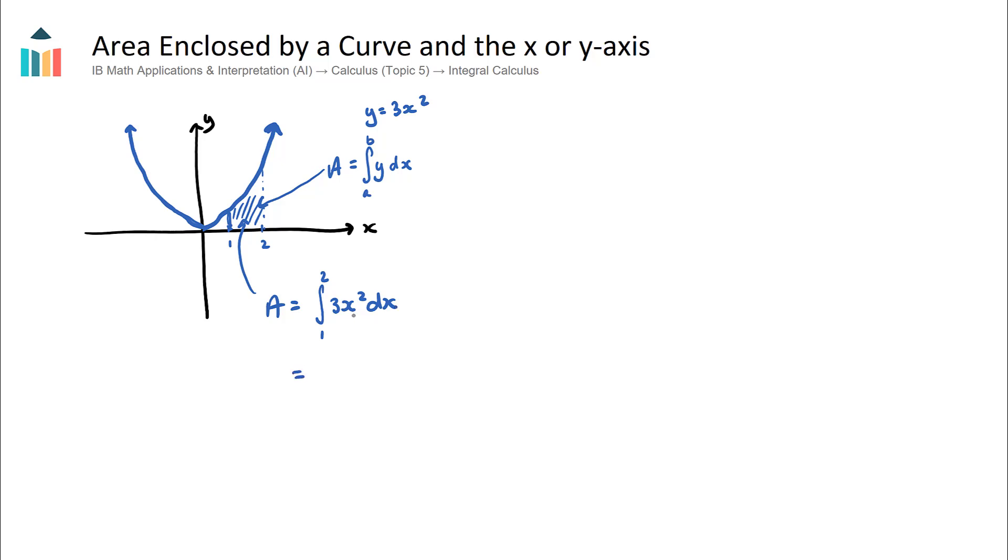What we can do is we can integrate 3x squared, this will become 3x to the power of 3 over 3, which is just going to be x cubed. Once we cancel out the threes, we will get x cubed, we have an upper bound of 2 and a lower bound of 1. Once we substitute in our upper boundary, we will get 2 cubed, subtract 1 cubed, and we will get 8 minus 1, which is 7.